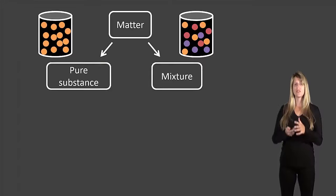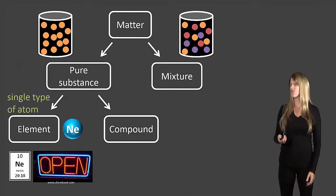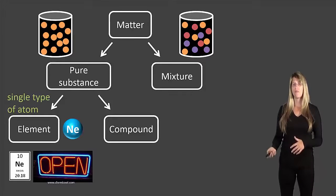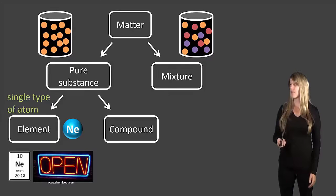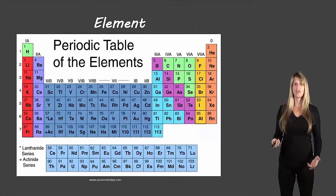Now let's take a look at our pure substances. These can also be split into two: elements and compounds. Now elements have only a single type of atom so this is something you could find on the periodic table like neon for example.